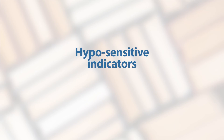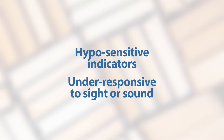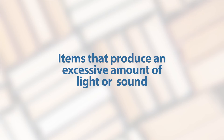Indicators that an individual with autism is hyposensitive or under-responsive to sight or sound can also be identified by their response to the stimuli. In some cases, an individual may gravitate towards items that produce an excessive amount of light or sound.